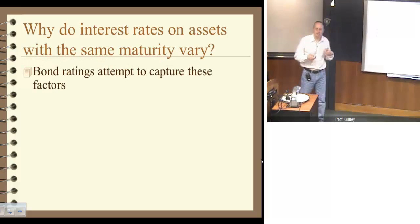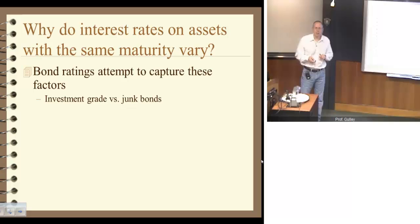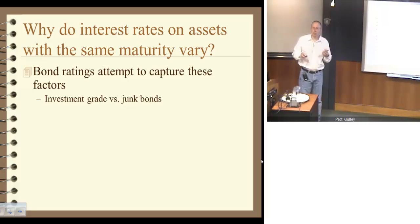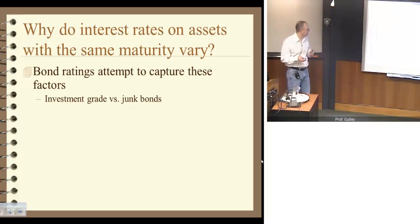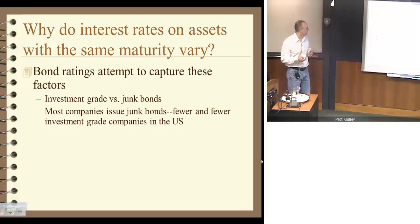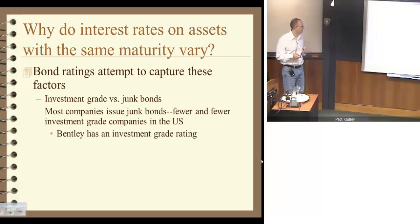Bond ratings attempt to capture these factors. This is all why we have investment grade versus junk bonds. Using just one measure — Standard and Poor's, for instance — bonds rated BBB or higher are classified as investment grade. Any bonds rated below BBB are rated as junk. Most companies actually issue junk bonds — below investment grade. Very few companies, relatively speaking, are rated investment grade, and only very few are rated AAA, the highest and most safe. Bentley, interestingly enough, has a single-A investment grade rating from S&P — that's pretty good.